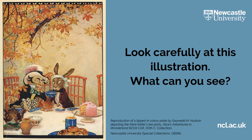There was a table set out under a tree in front of the house, and the March Hare and the Hatter were having tea at it. A dormouse was sitting between them fast asleep, and the other two were resting their elbows on it and talking over its head. Very uncomfortable for the dormouse, thought Alice. Only as it's asleep, I suppose it doesn't mind. The table was a large one, but the three were all crowded together at one corner of it. 'No room, no room,' they cried when they saw Alice coming. 'There's plenty of room,' said Alice indignantly, and she sat down in a large armchair at one end of the table.